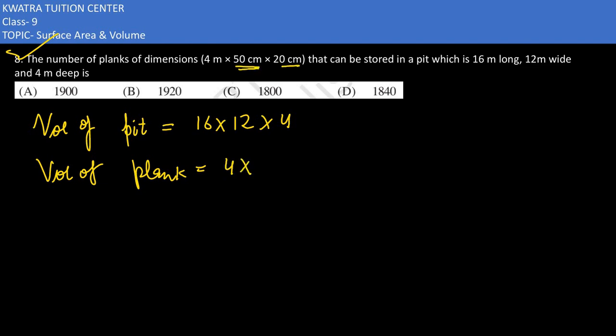But notice that these measurements are in centimeters while the other values are in meters. So 50 centimeters converts to 0.5 meters, and 20 centimeters to 0.2 meters. Now we need to find the number of planks.